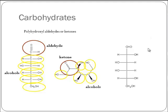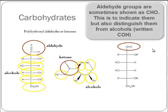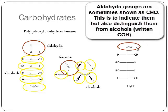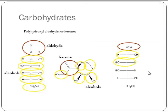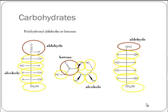Let's check this one out. This is an abbreviated way of showing an aldehyde. They carefully write C-H-O as opposed to C-O-H to indicate the aldehyde, while the other is an alcohol. So this has an aldehyde and a whole bunch of alcohols — many alcohols, another carbohydrate. This one happens to be glucose.